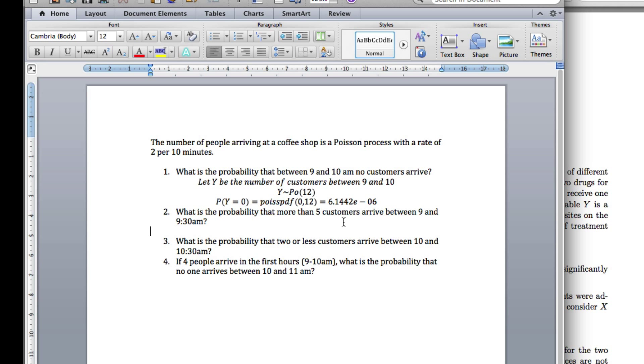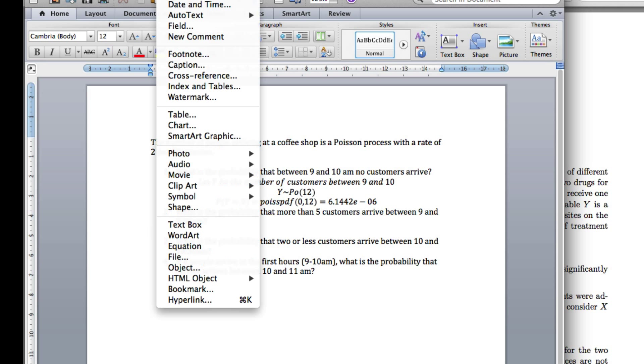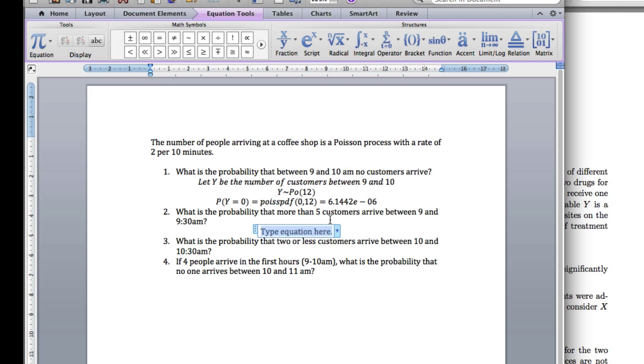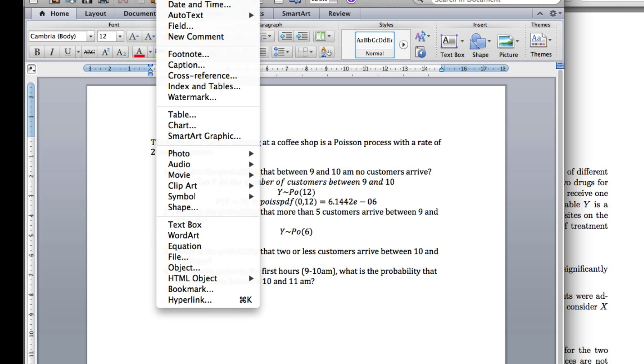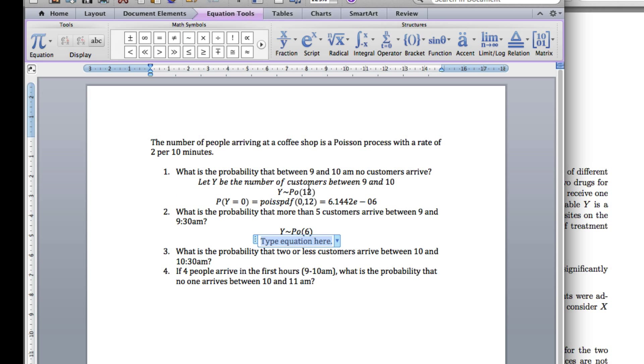What is the probability that more than 5 customers arrive between 9 and 9:30? First of all, if we let Y be the number of customers between this time. This time Y is going to be Poisson, and I'm going to get half an hour, so that's going to be 6. What do we want? We want the probability that more than 5, so Y is greater than 5.